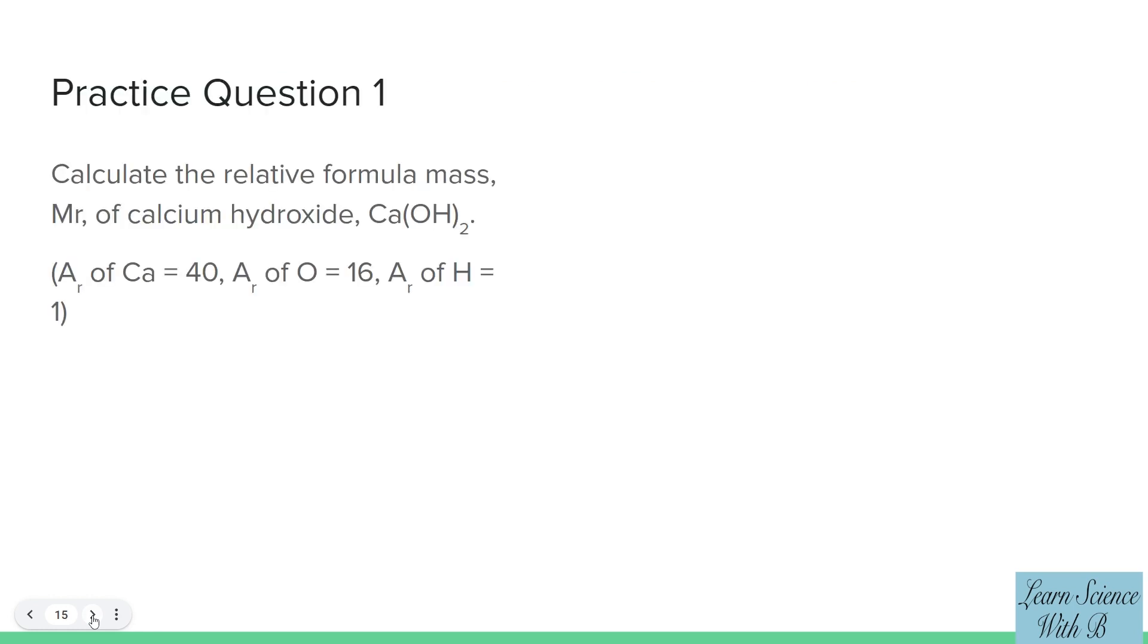Calculate the relative formula mass, MR, of calcium hydroxide, Ca(OH)2. AR of Ca equals 40, AR of O equals 16, AR of H equals 1. Pause video here.